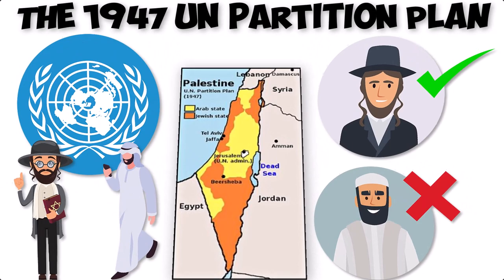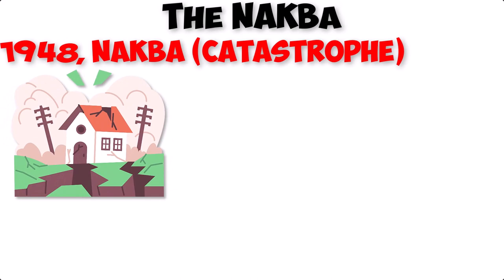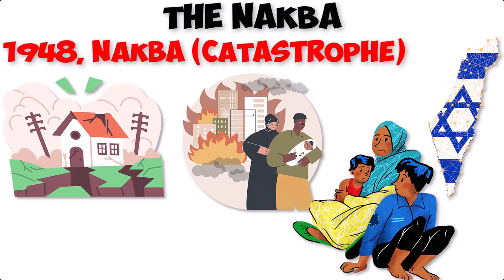The book extensively covers the events of 1948, known as the Nakba — Catastrophe — from the Palestinian perspective. It discusses the displacement of hundreds of thousands of Palestinian Arabs as a result of the war, the establishment of the State of Israel, and the ongoing refugee crisis.